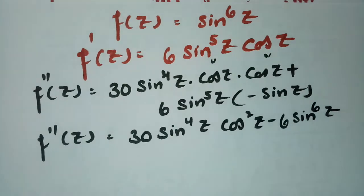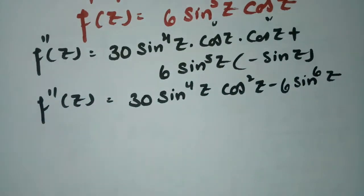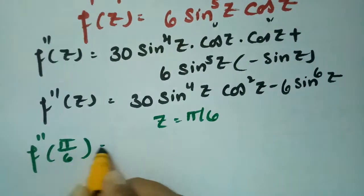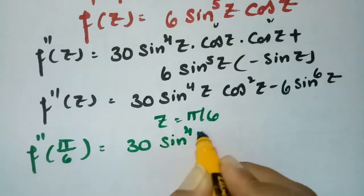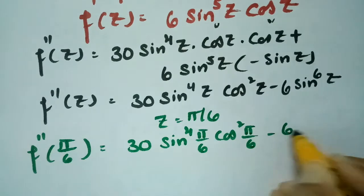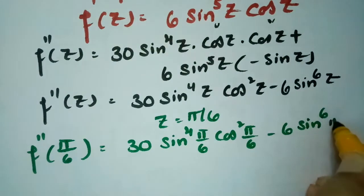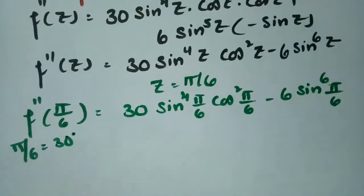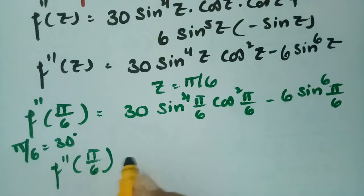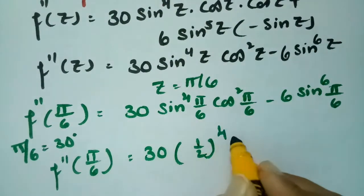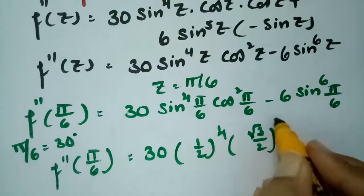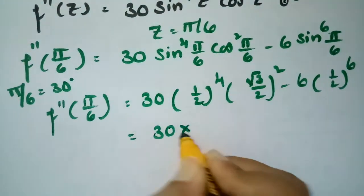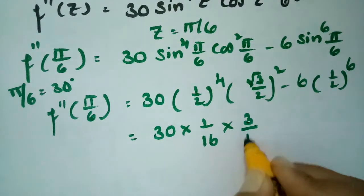So f''(z) = 30 sin⁴z cos²z minus 6 sin⁶z. Now substituting z = π/6, which is 30 degrees: f''(π/6) = 30 times sin⁴(π/6) times cos²(π/6) minus 6 times sin⁶(π/6). Since sin(30°) = 1/2 and cos(30°) = √3/2, this becomes 30 times (1/2)⁴ times (√3/2)² minus 6 times (1/2)⁶.